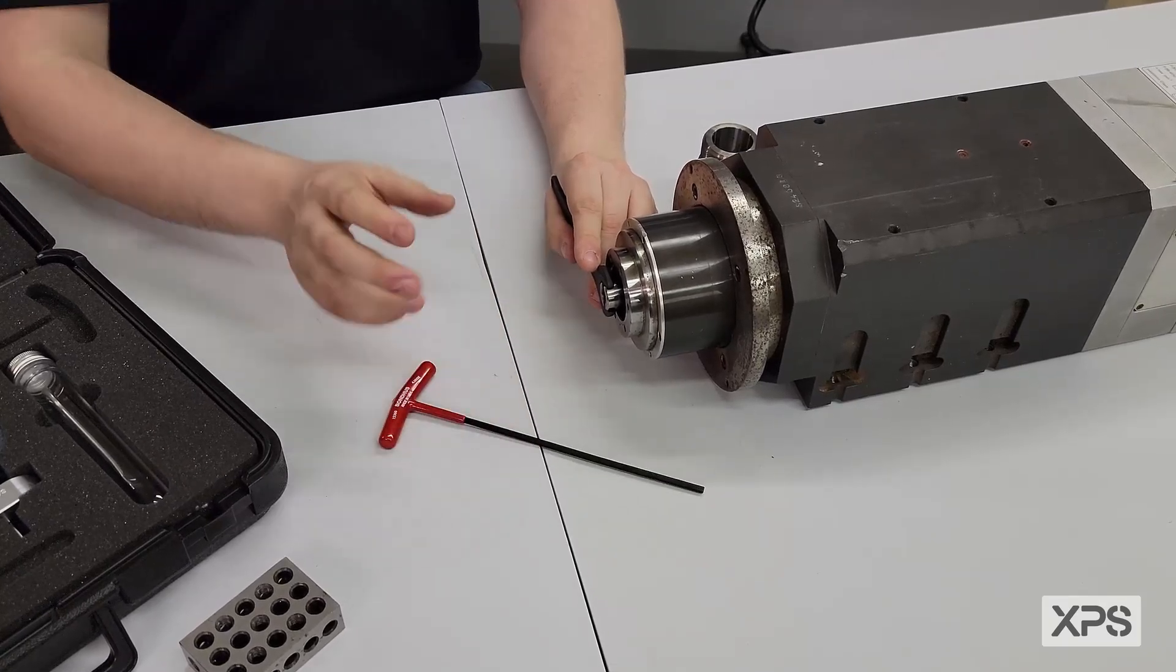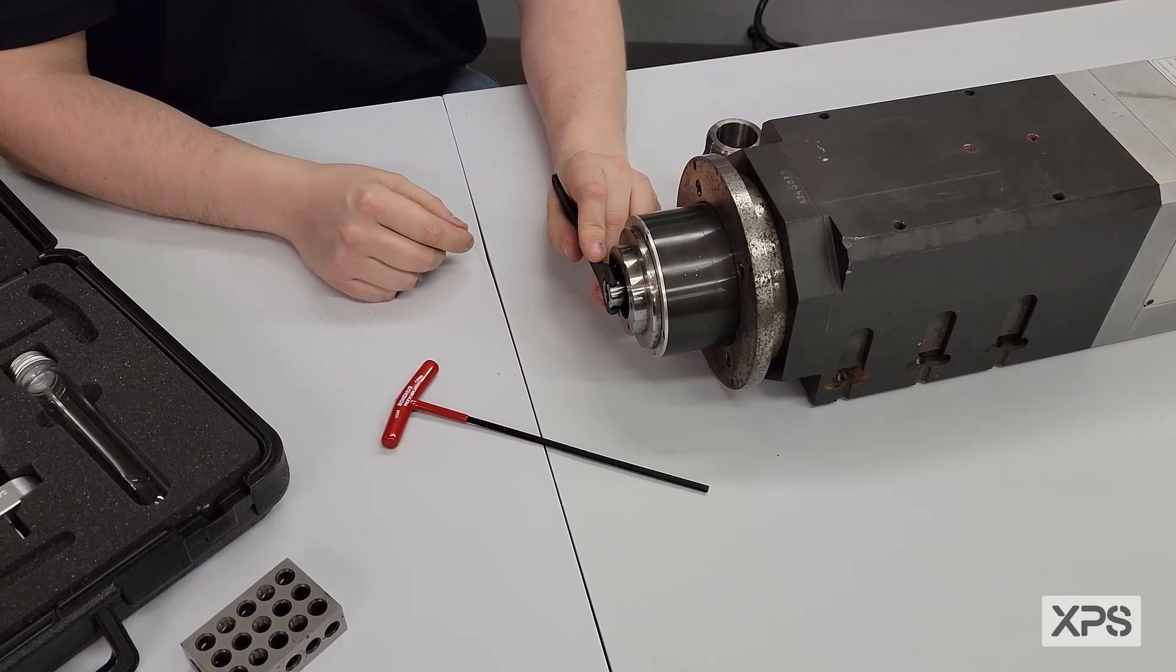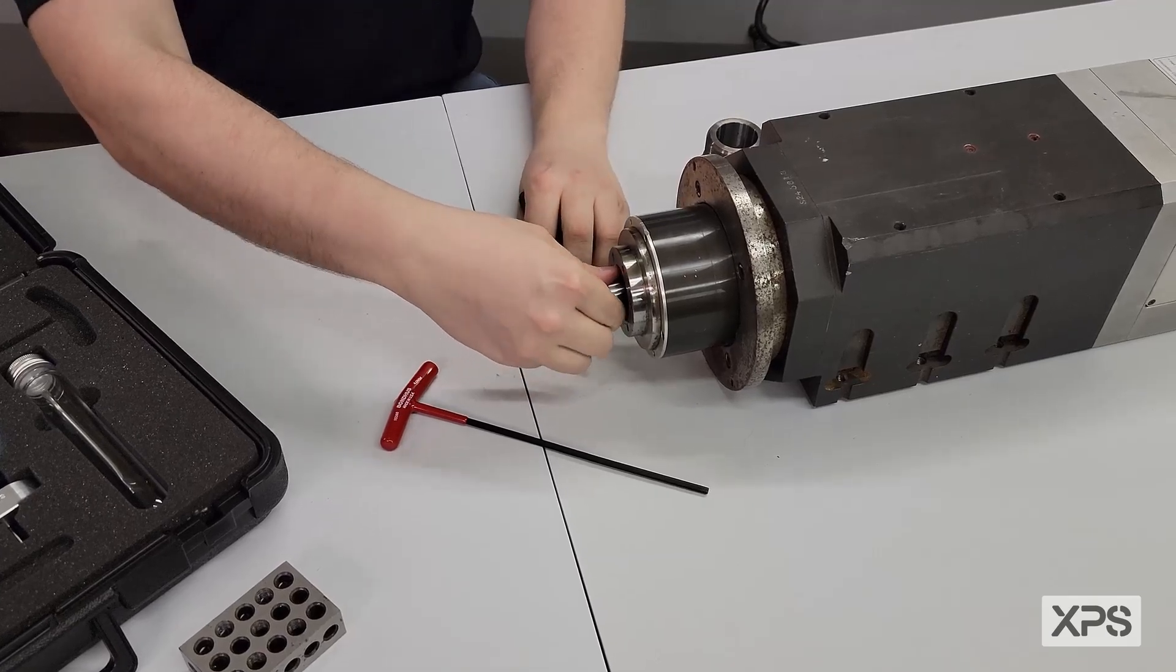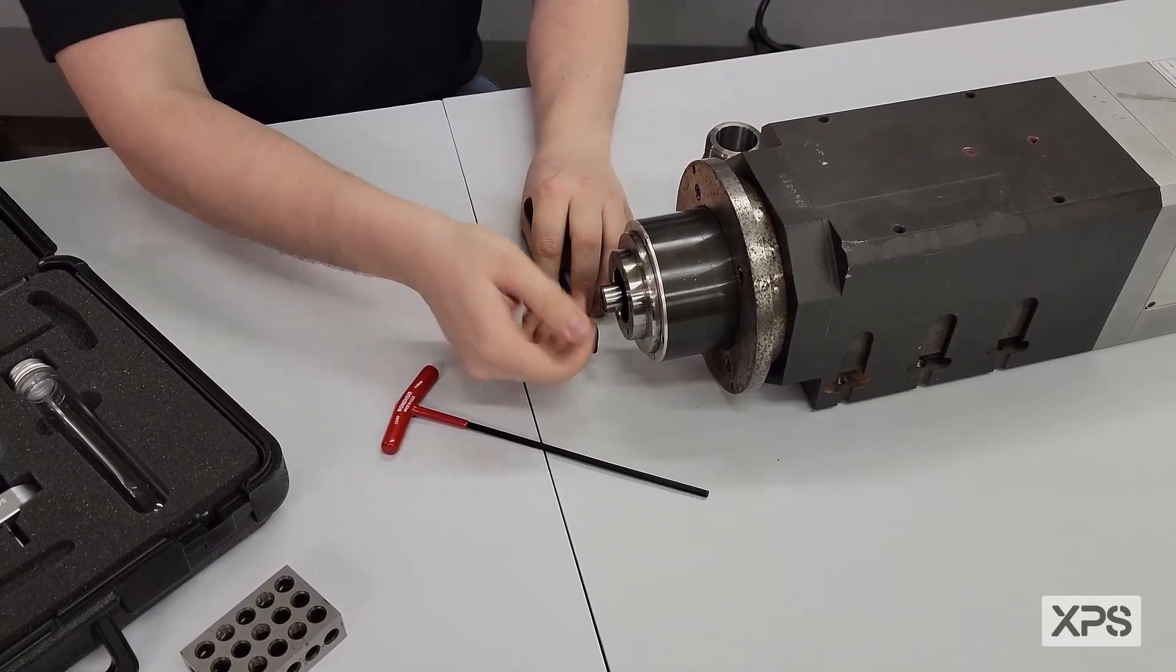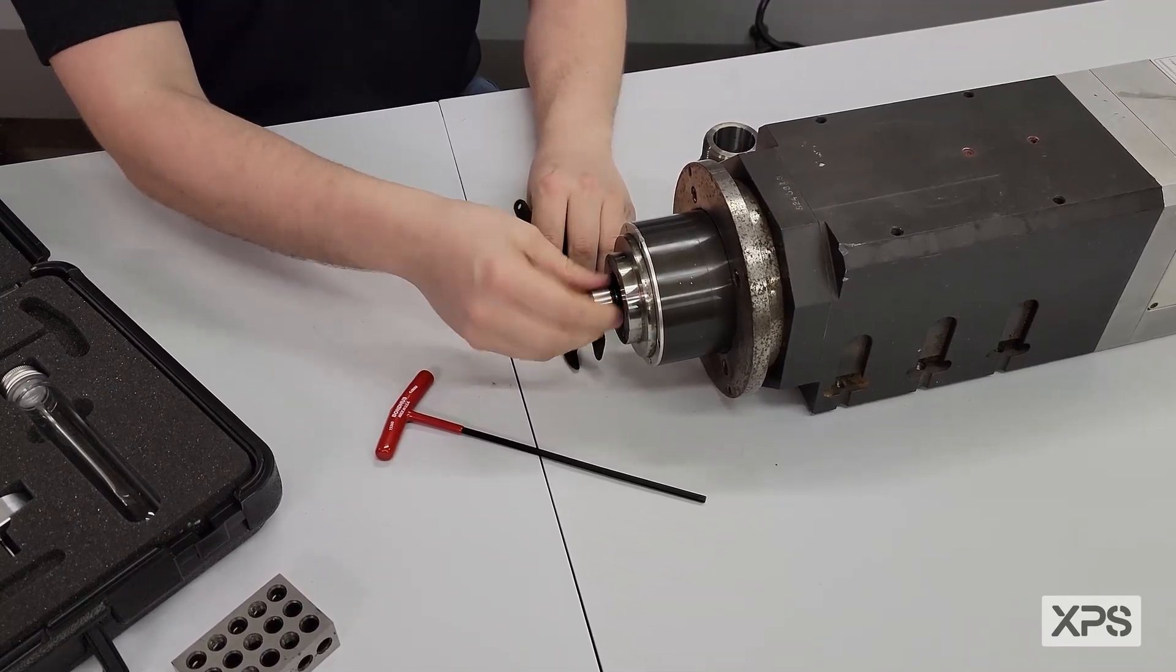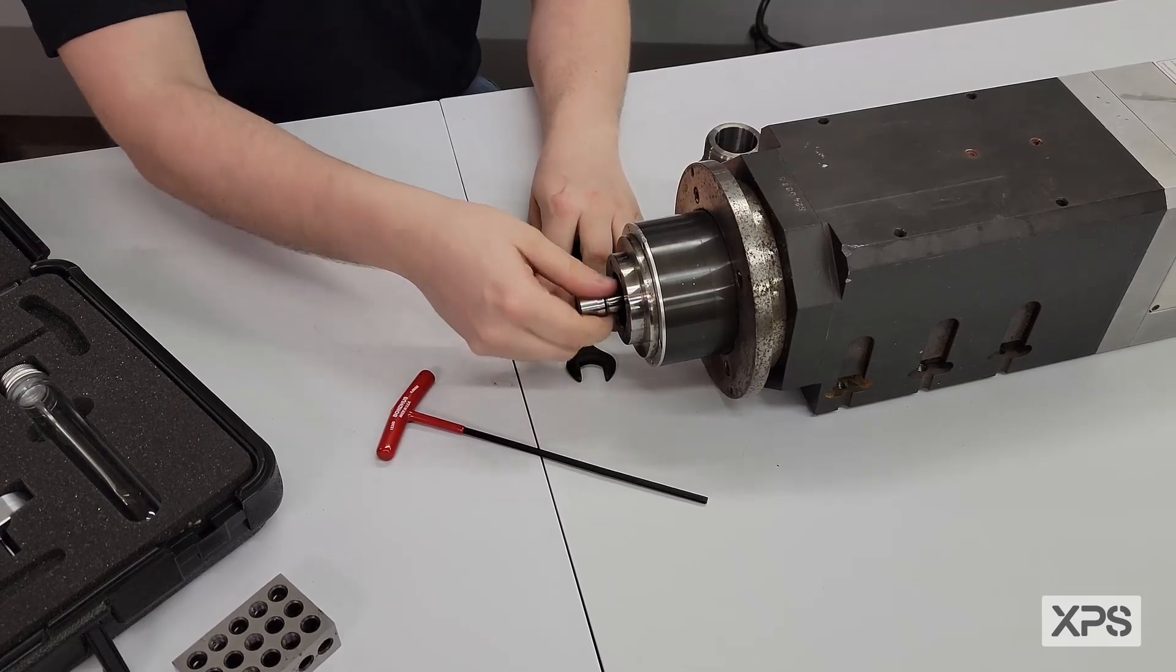Now that the set screw is loose, you can loosen the spool counterclockwise and remove it from the bottom of the spindle.